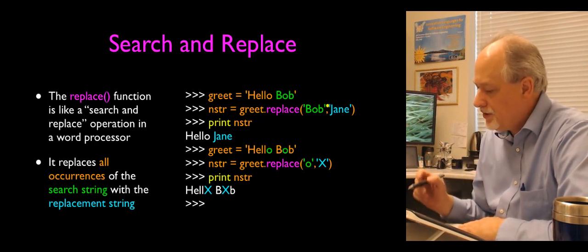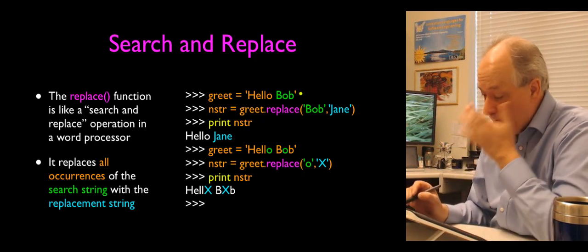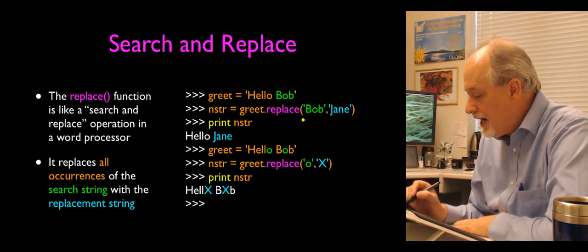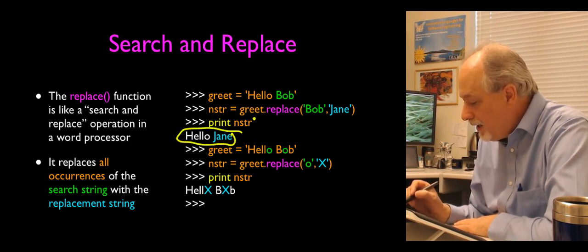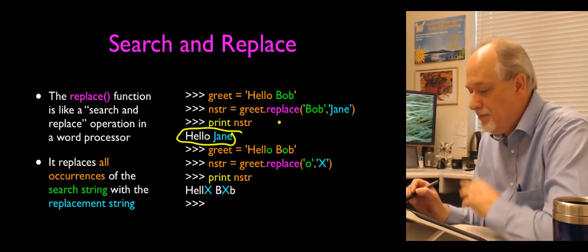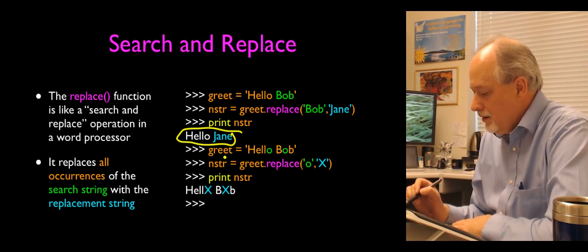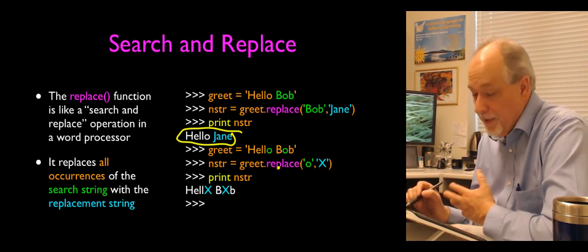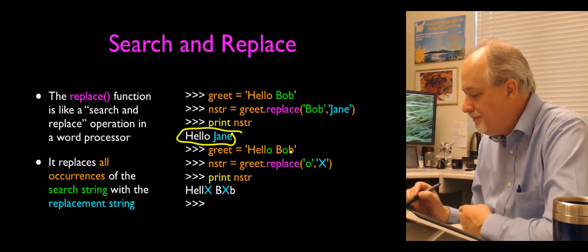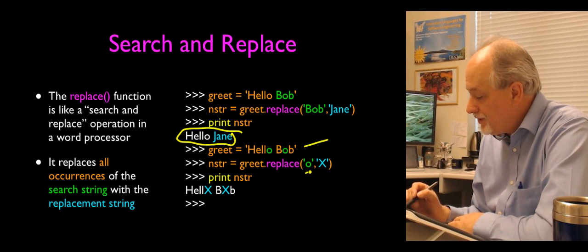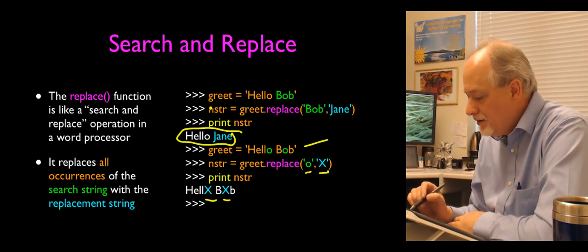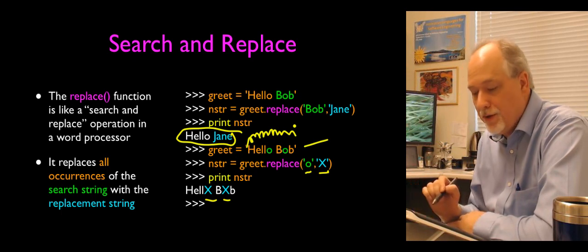There is a replace function — again, it doesn't change the value. Greet is 'Hello Bob'. greet.replace('Bob', 'Jane') gives back a copy. So nstr says 'Hello Jane'. Greet is unchanged. Replace makes a copy with the requested edit. replace is going to do all occurrences — so replacing all lowercase 'o' with uppercase 'X' in 'Hello Bob' changes both o's.